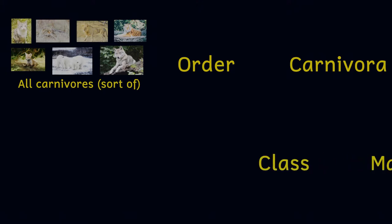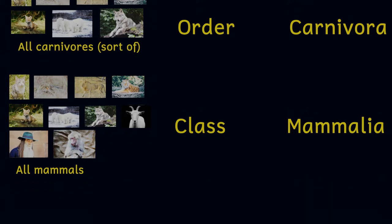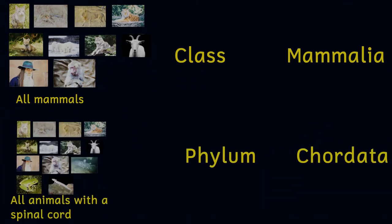When we get down to the class Mammalia, this still contains my cat but it also contains all mammals. It contains dogs and wolves and horses and sheep and me and you.